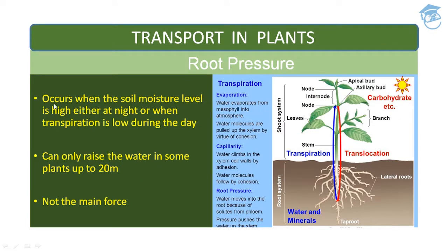Root pressure occurs when soil moisture level is high, either at night or when transpiration is low during the day or in the early morning. It can only raise water in some plants up to 20 meters. It is not the main force — root pressure is not the main force for moving water up a long distance in the stem.